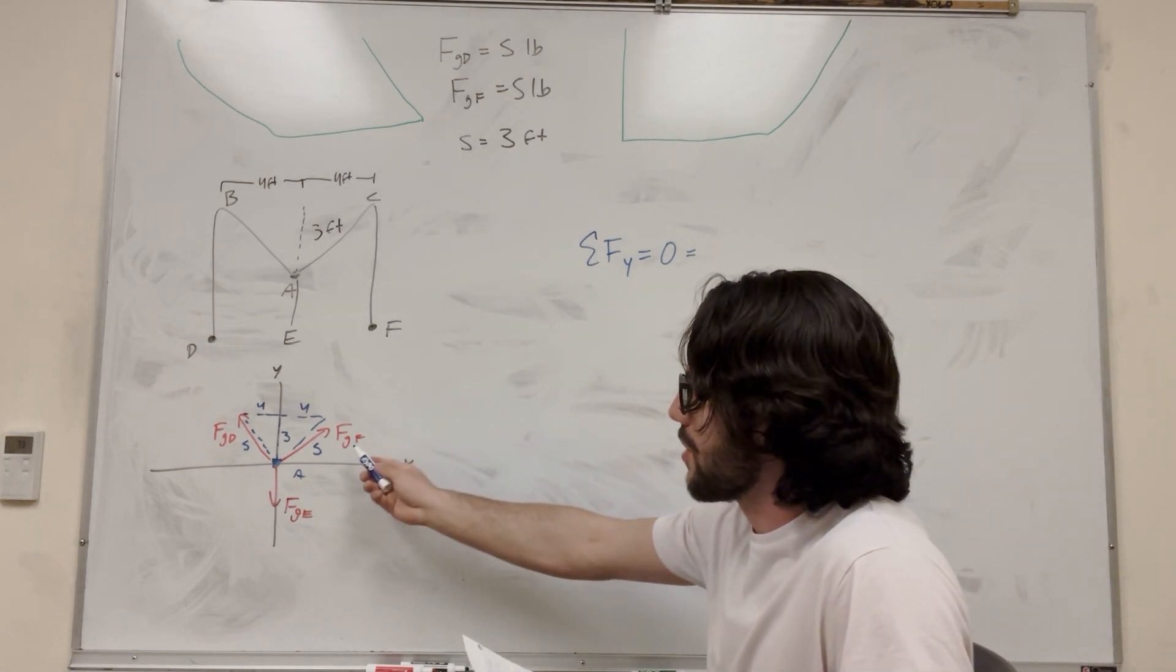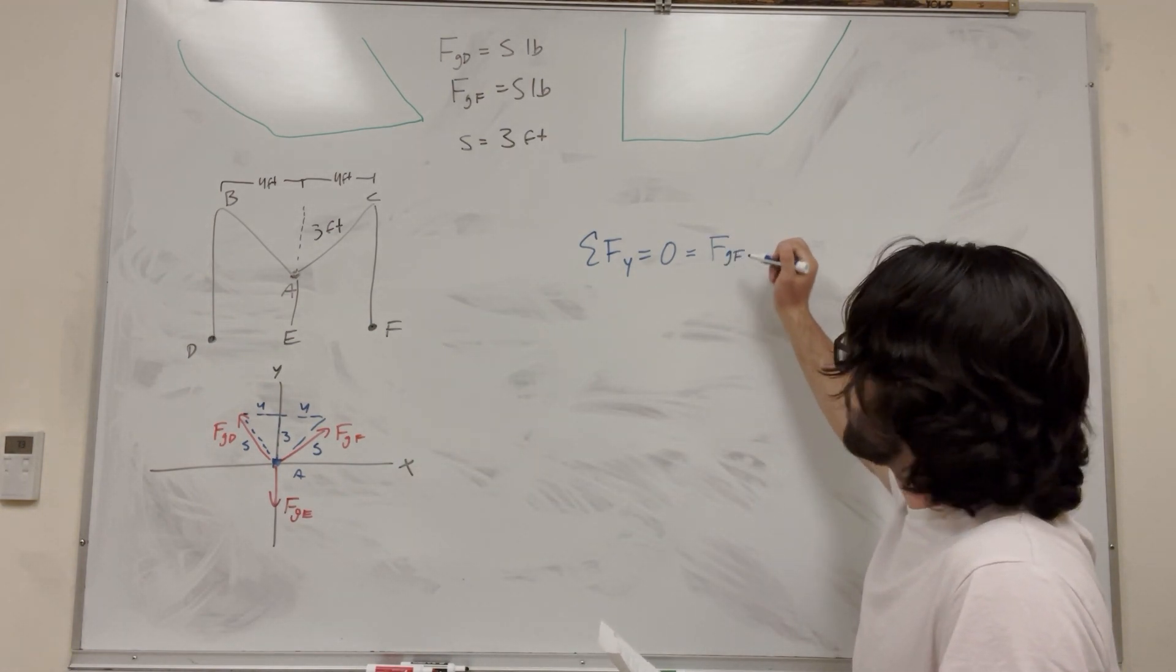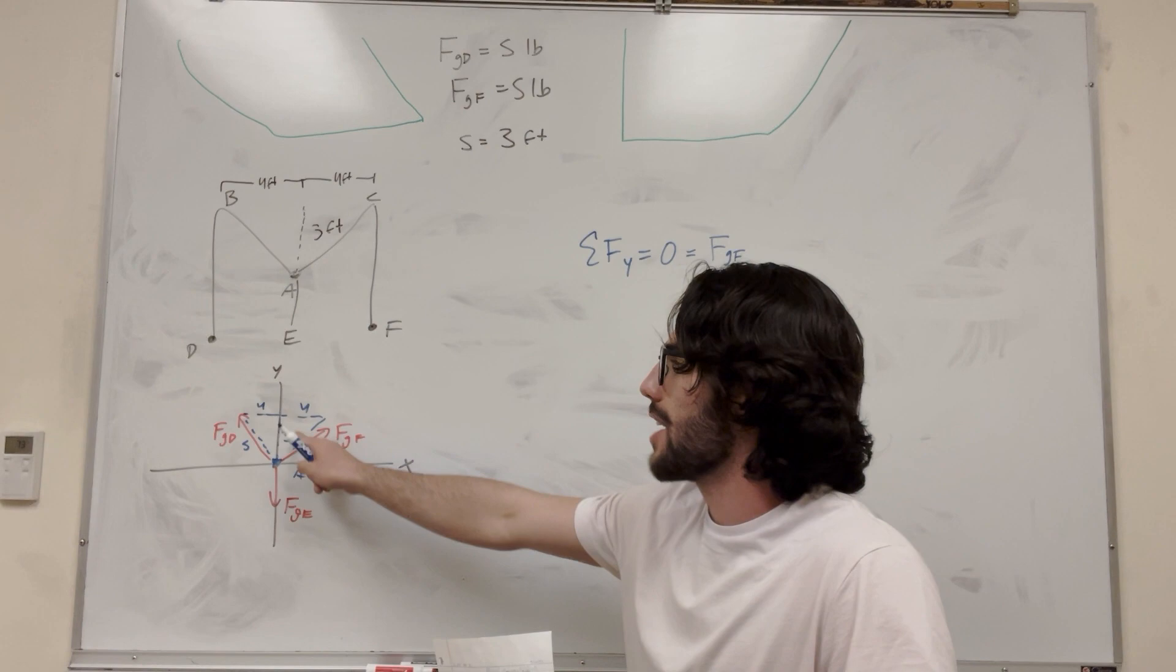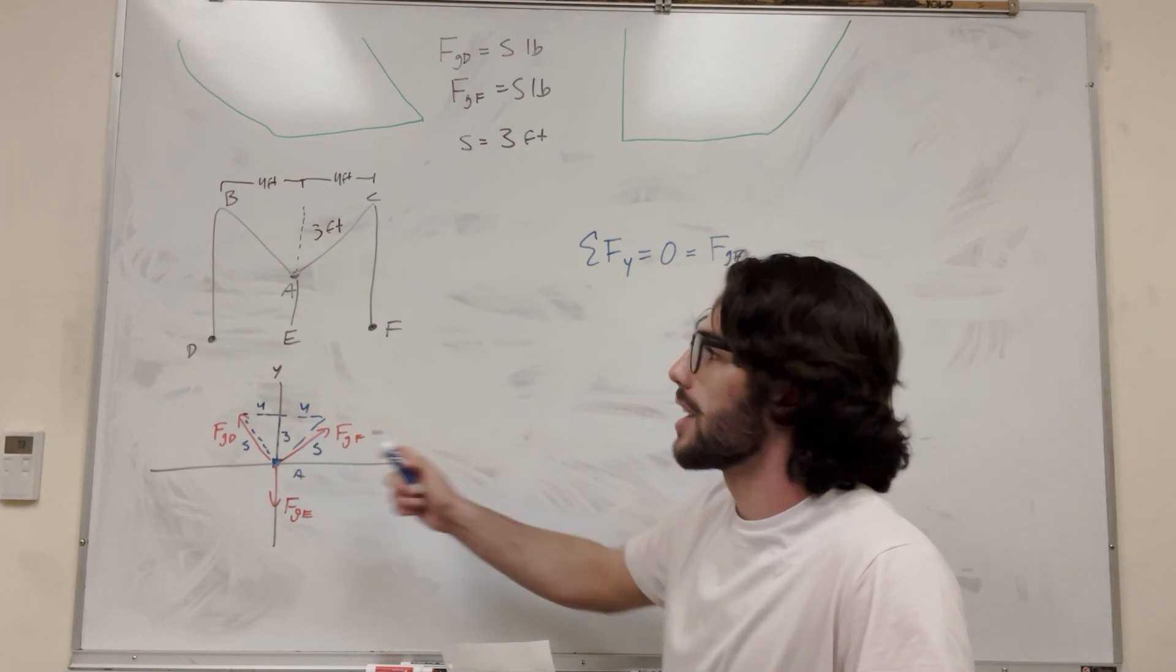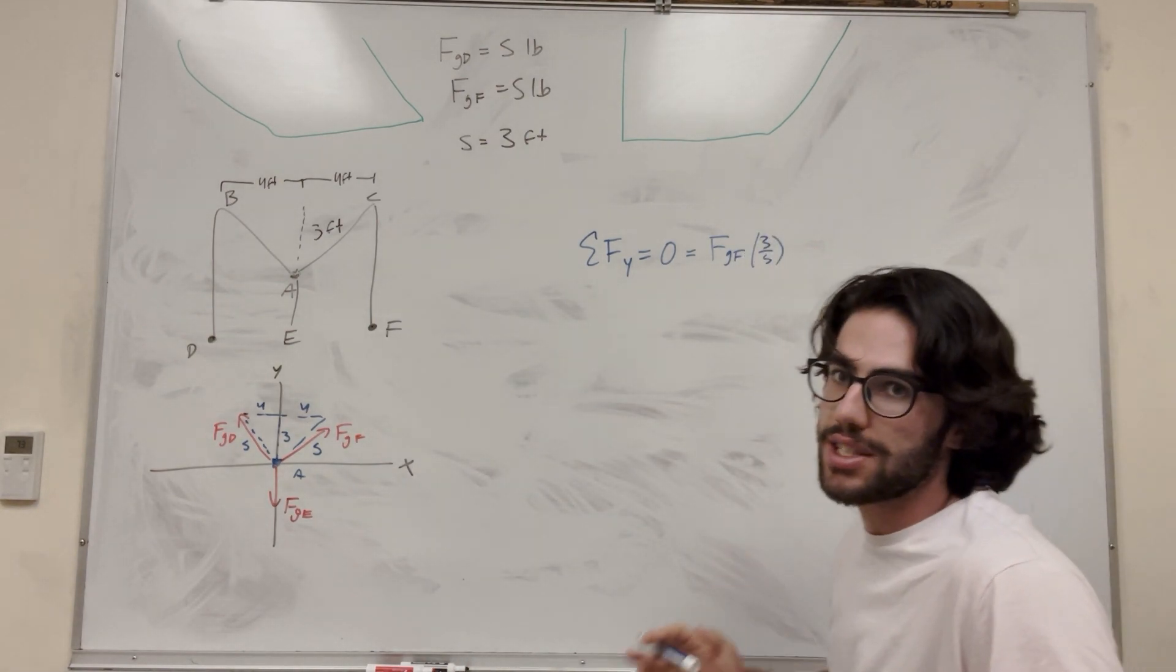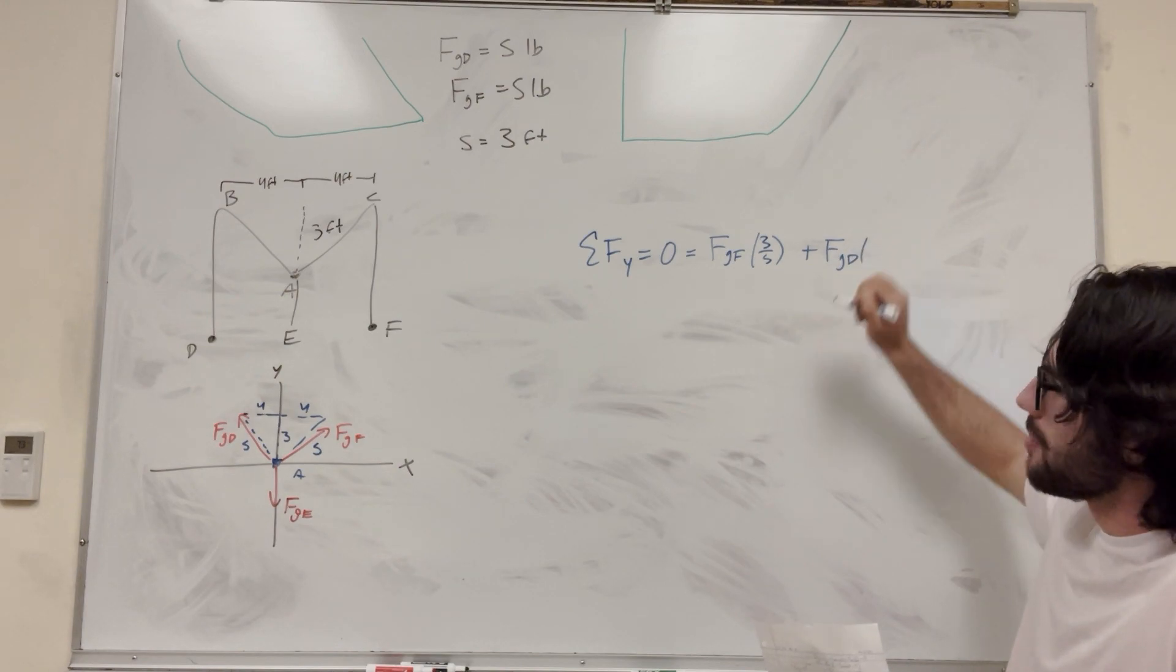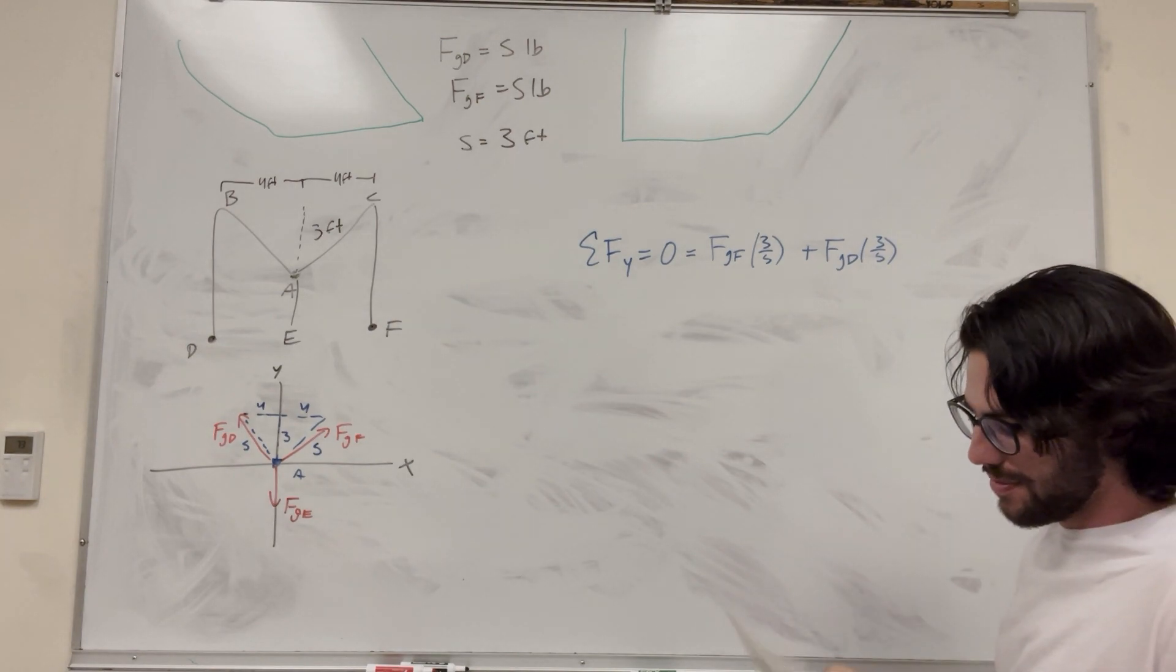So let's start with it going upwards. So force gravity F pulls up. But then what angle does it pull up at? It doesn't all pull up. We have to consider only what's being pulled up. So the ratio of y to hypotenuse is 3 to 5. So it's going to be force gravity F, multiplied by 3 over 5. That's only how much it pulls up in the y direction. So then we can do the next one, plus force gravity D, which is the one on the left. And then the same thing about that one, it pulls up 3 to 5.